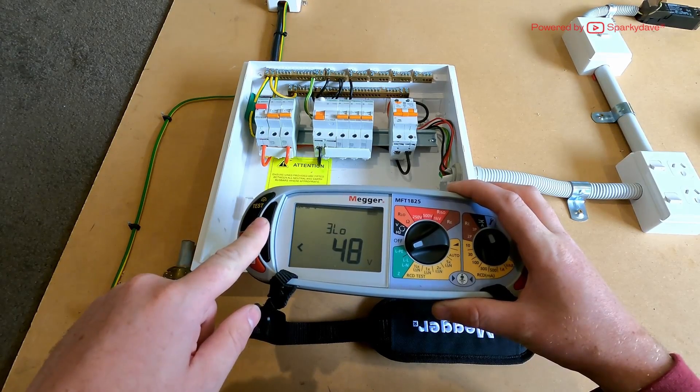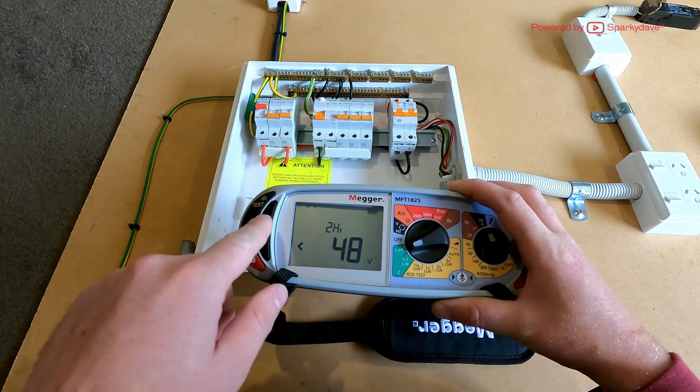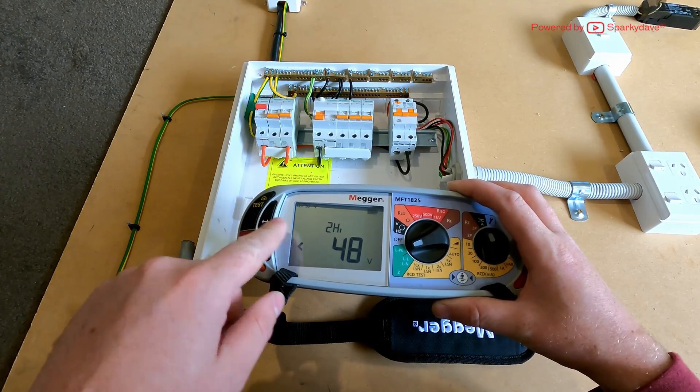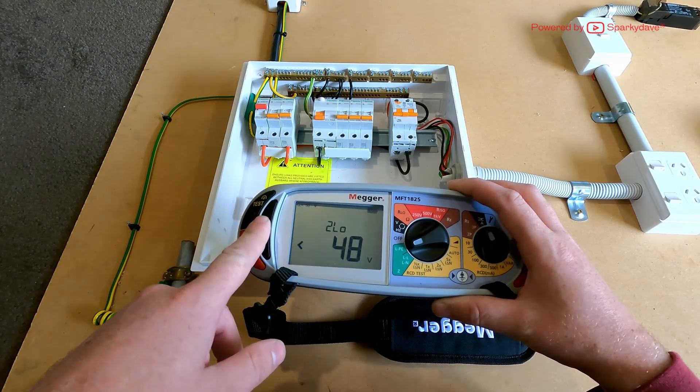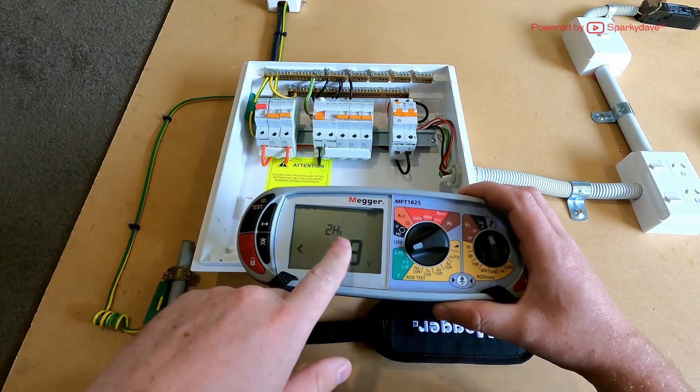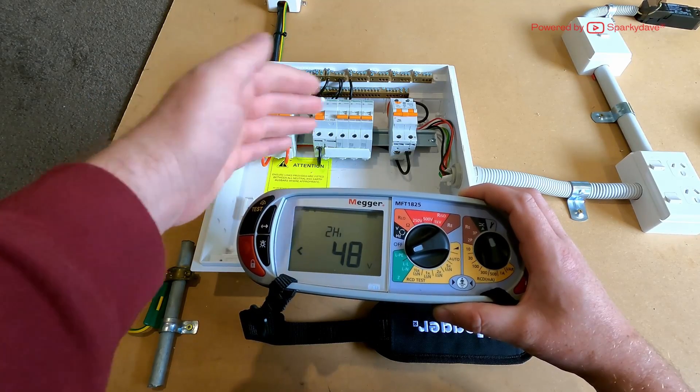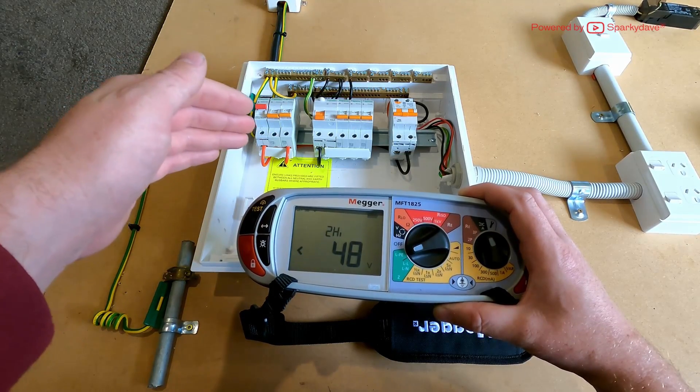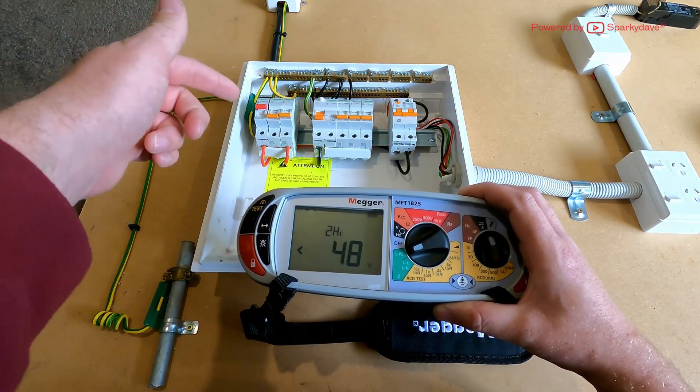If you push the select button here, you can go between the other two lead tests. There's two high and two low. First of all, the two lead high current test you want to do on the line side of your RCDs and the switchboard. We're going to be testing from the line side of the main switch.